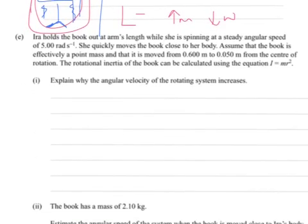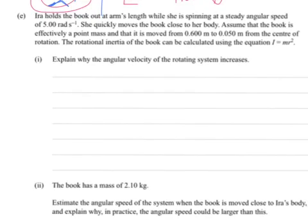Part E: Ira holds the book at arm's length while spinning at a steady angular speed of 5 radians per second. She quickly moves the book close to her body. Assuming the book is effectively a point mass, it's moved from 0.600 meters to 0.050 meters from the center of rotation. The rotational inertia of the book can be calculated using I equals mR squared. Explain why the angular velocity of the rotating system increases.